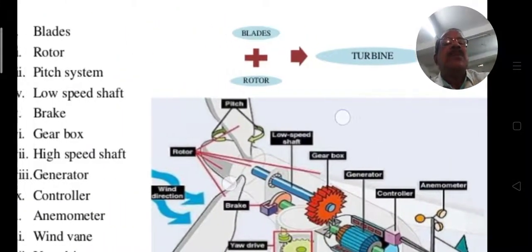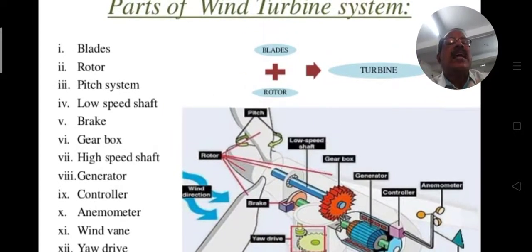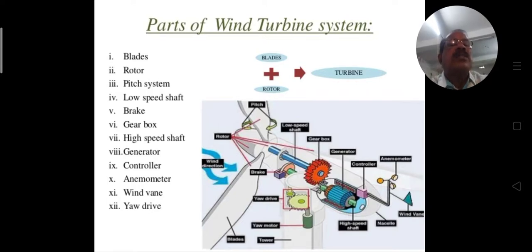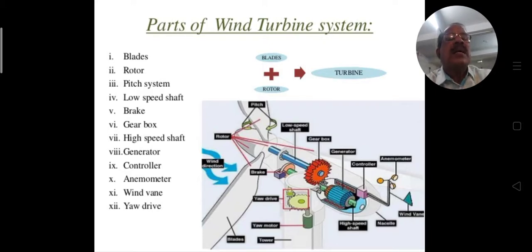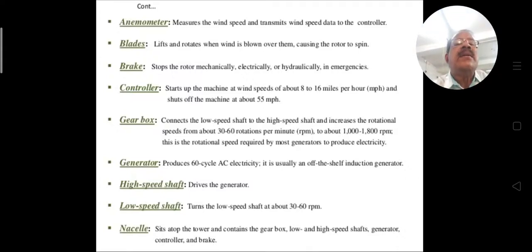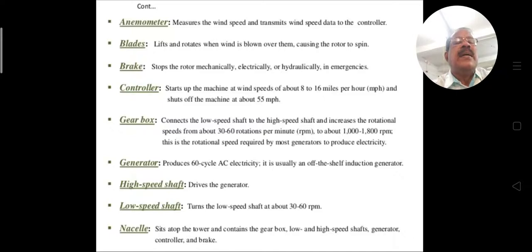This is the simple mechanism: blades and rotor together form the turbine. The main parts are the rotor, shaft, gearbox, and generator, along with many smaller parts. The anemometer measures the wind speed and transmits wind speed data to the controller.